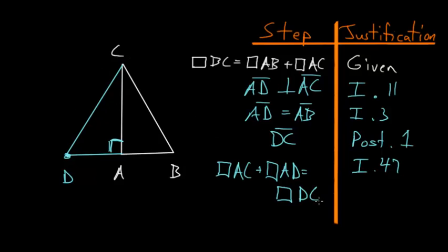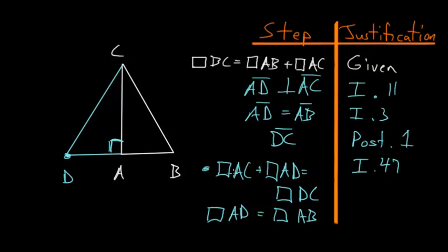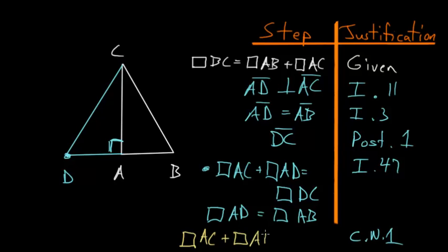Since AD and AB are equal to each other, the square on AD equals the square on AB. So we can make this substitution: in the equation, the square on AC plus the square on AD equals the square on DC, we replace the square on AD with the square on AB. We can do this because of Common Notion 1. So we have the square on AC plus the square on AB equals the square on DC.